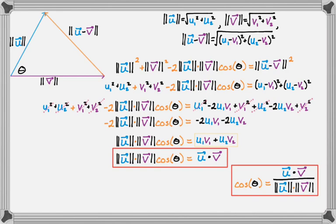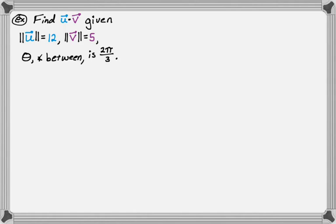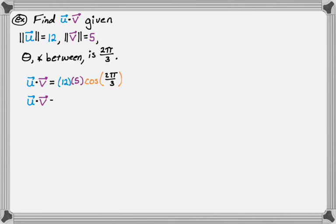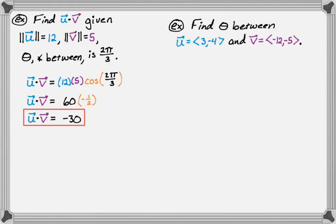Now let's do two examples. First, find the dot product of u and v, given the magnitude of u is 12, magnitude of v is 5, and theta is 2π/3. Using the formula, u dot v equals magnitude of u times magnitude of v times cosine of theta, which is 12 times 5 times cosine of 2π/3. That gives 60 times negative one-half, so u dot v equals negative 30.